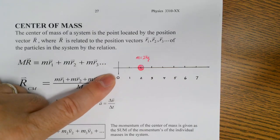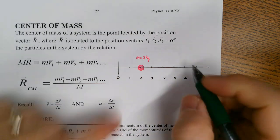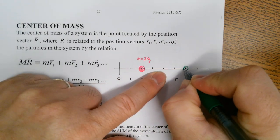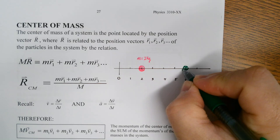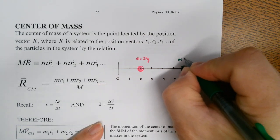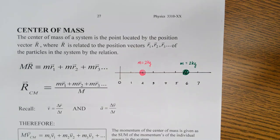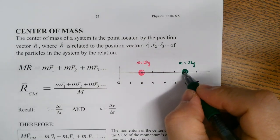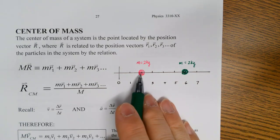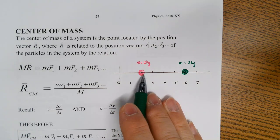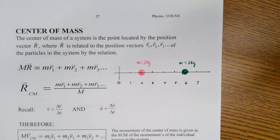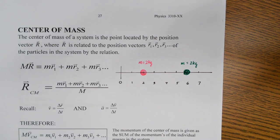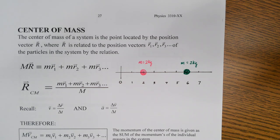And then I have a green ball at 6 meters away, and this one also has a mass of 2 kilograms. Now let's say these two spherical objects are connected with a very, very light, ultra-strong, thin rod.